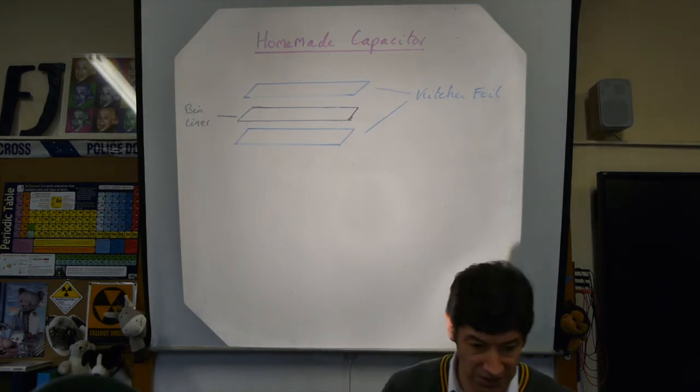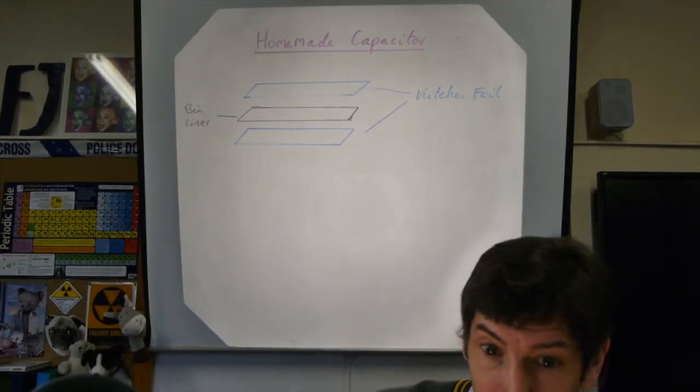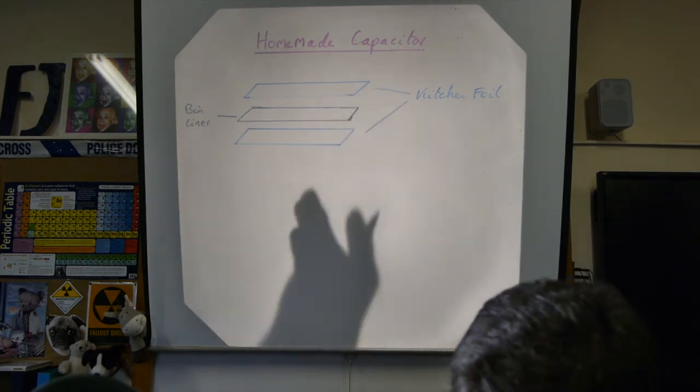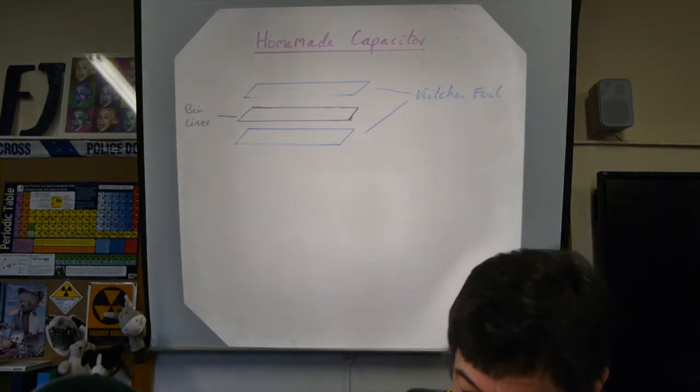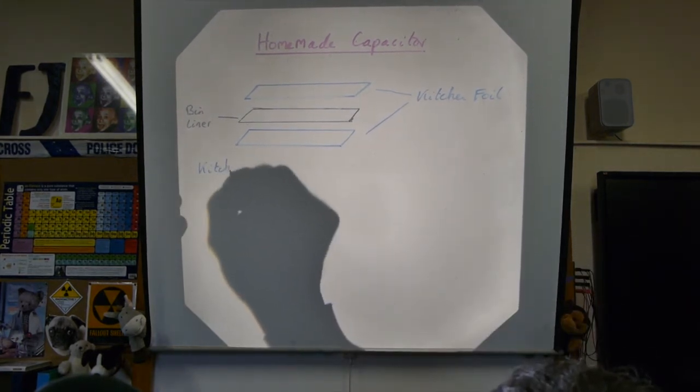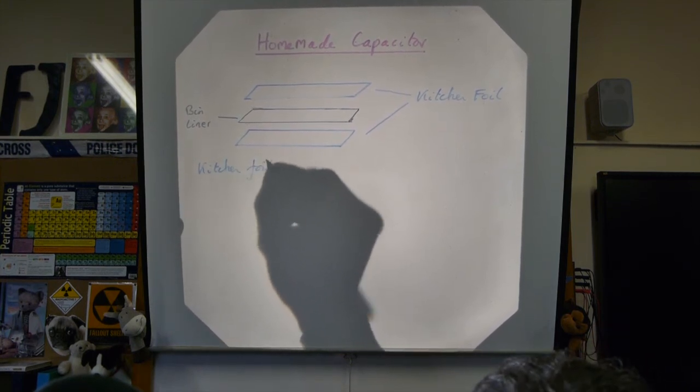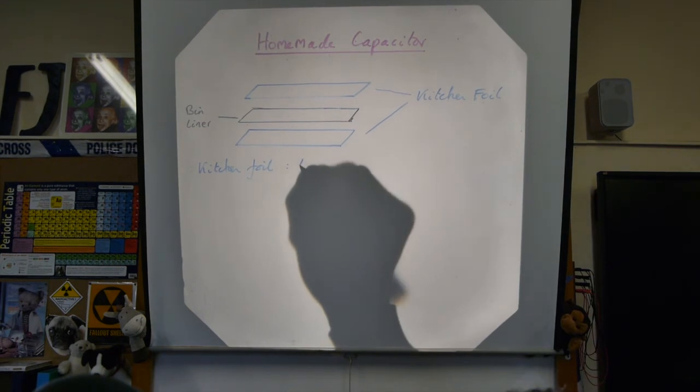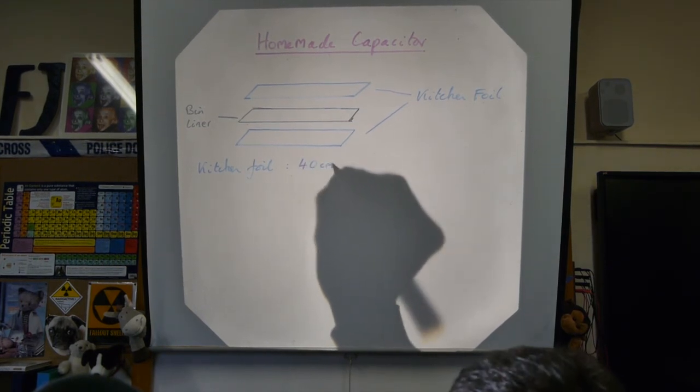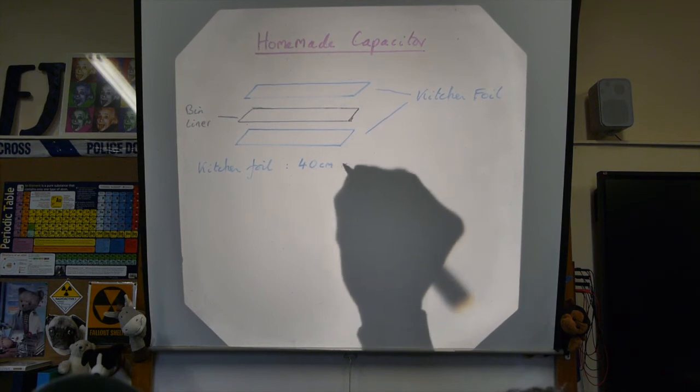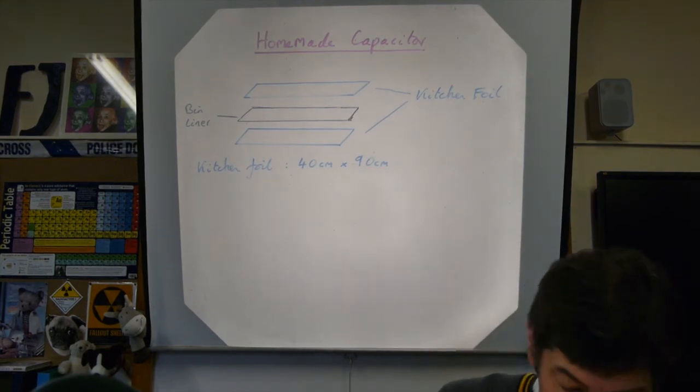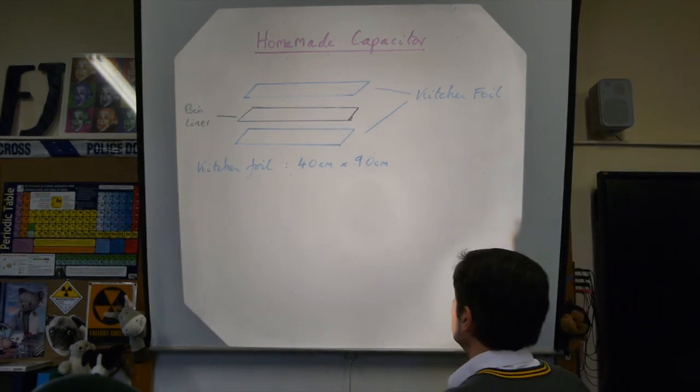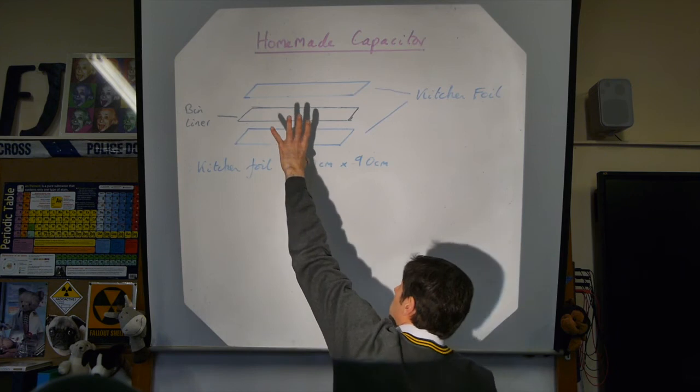So if we push those together, there'll be a separation between them and there'll be a surface area of the plate, and that will allow us to calculate what the capacitance of this homemade capacitor is. So let's put some numbers into this now. Let's make our kitchen foil, our parallel plates, you notice I've taken our parallel plate capacitor and turned it through 90 degrees. So the kitchen foil, our plates, let's make it 40 centimeters. So it's 40 centimeters that way by 90 centimeters.